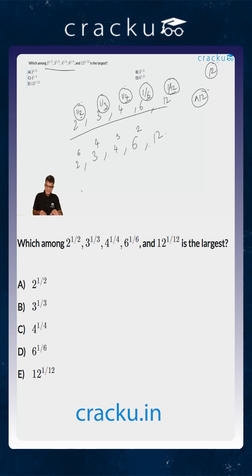Now if you are simplifying: 2 to the power 6 is 64, 3 to the power 4 is 81, 4 cube is 64, 6 square is 36, and then you have 12.